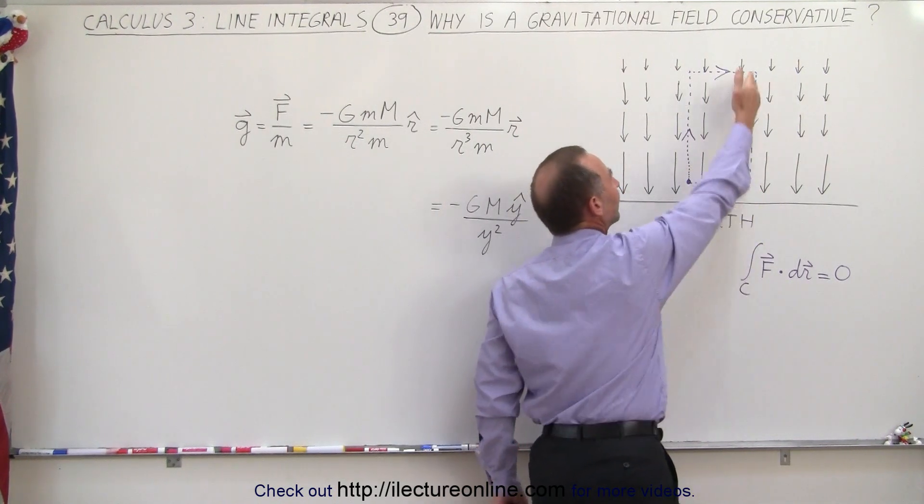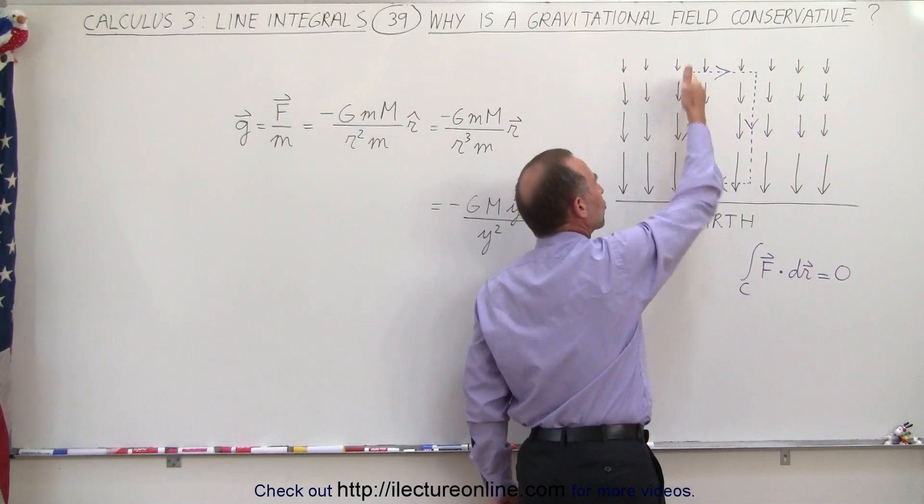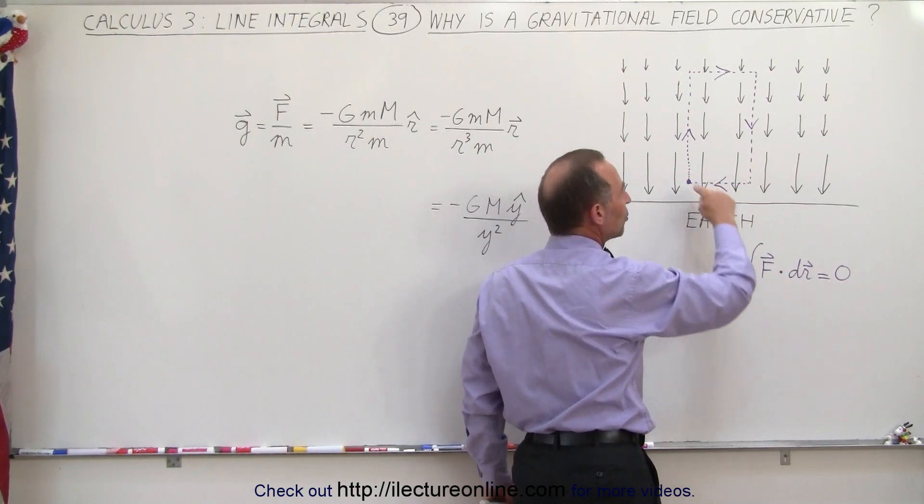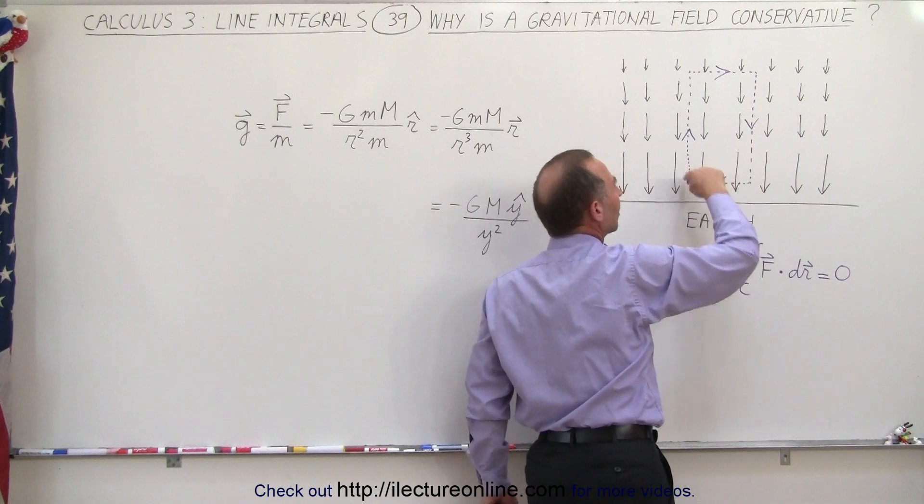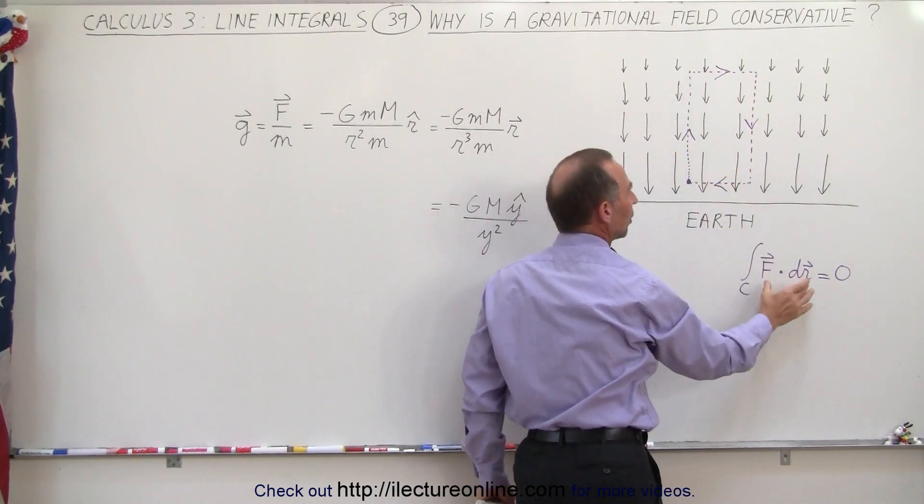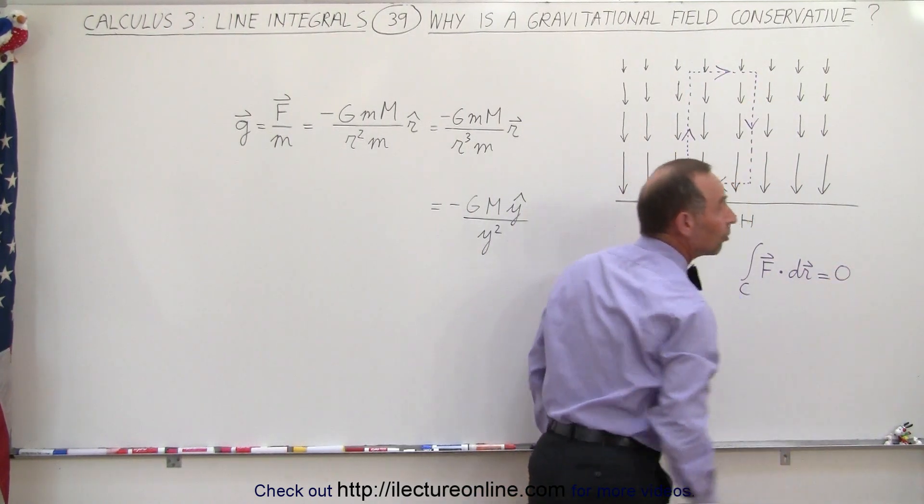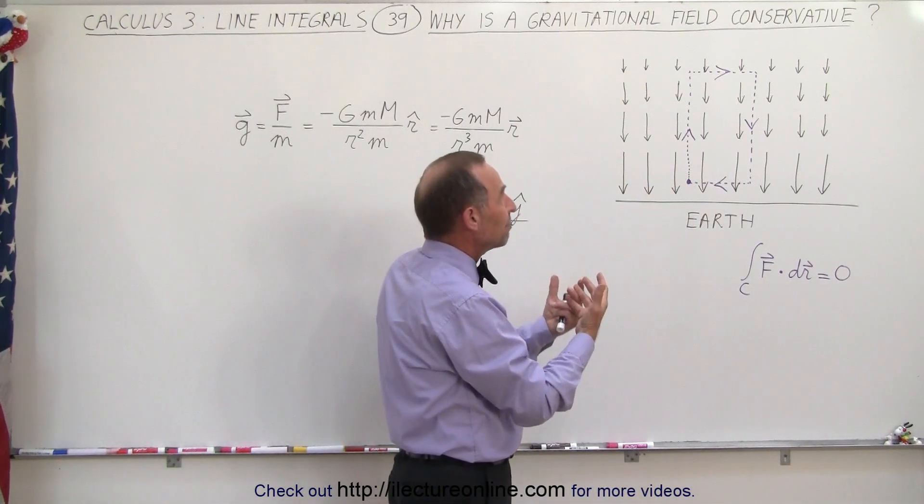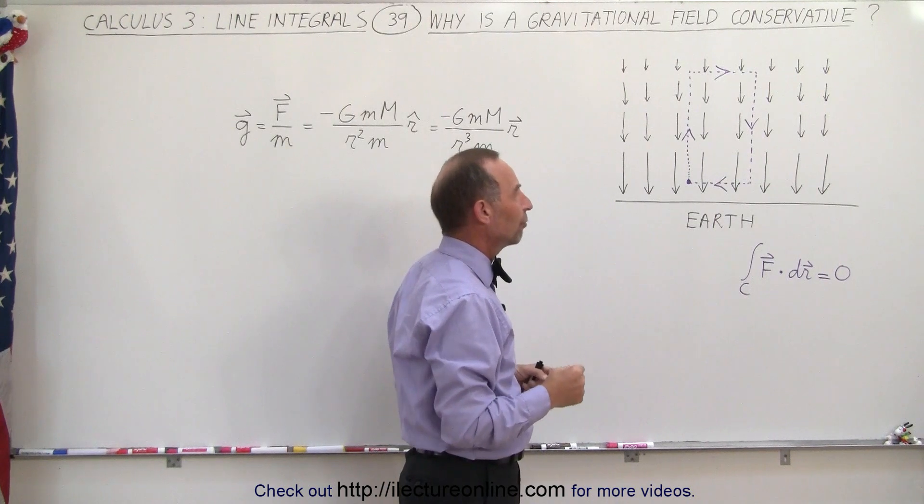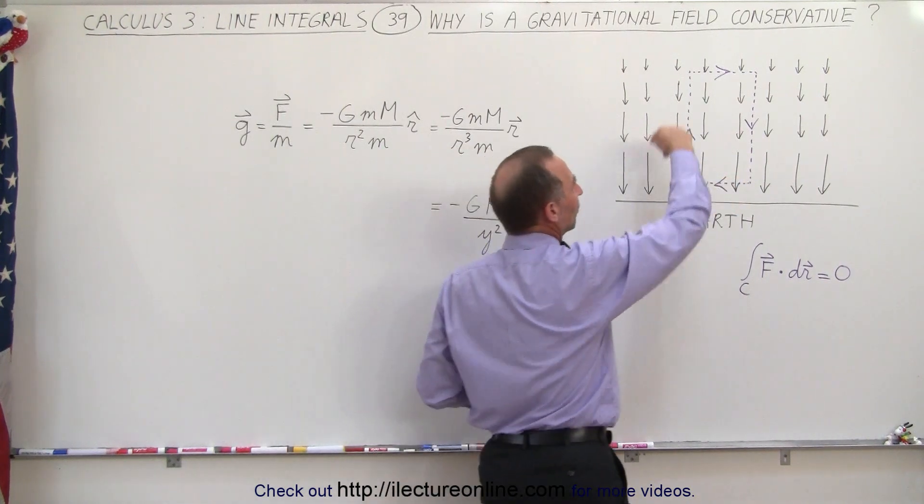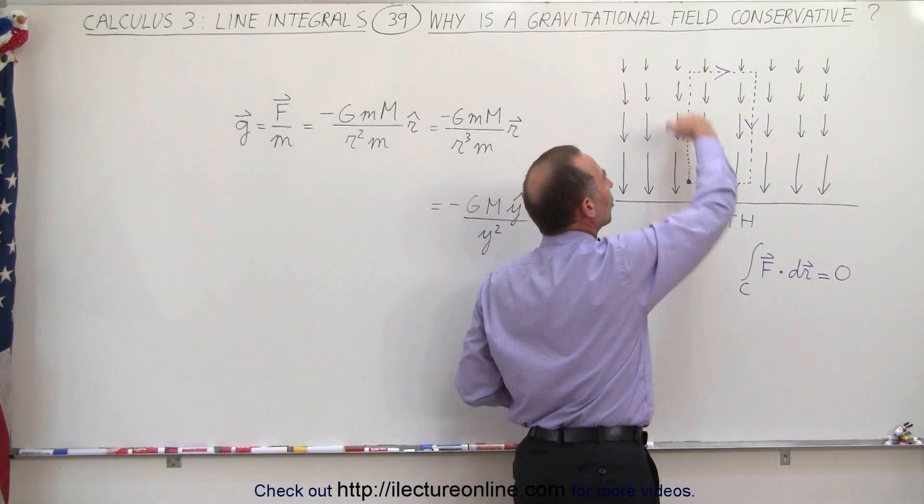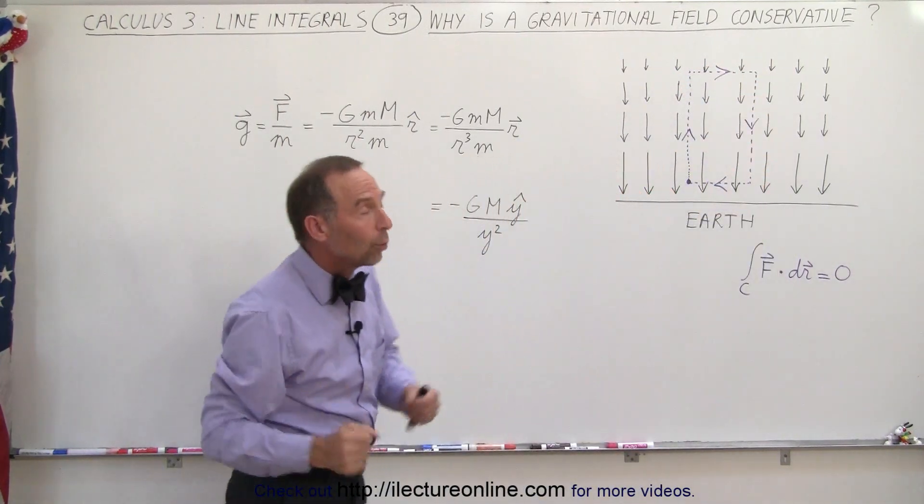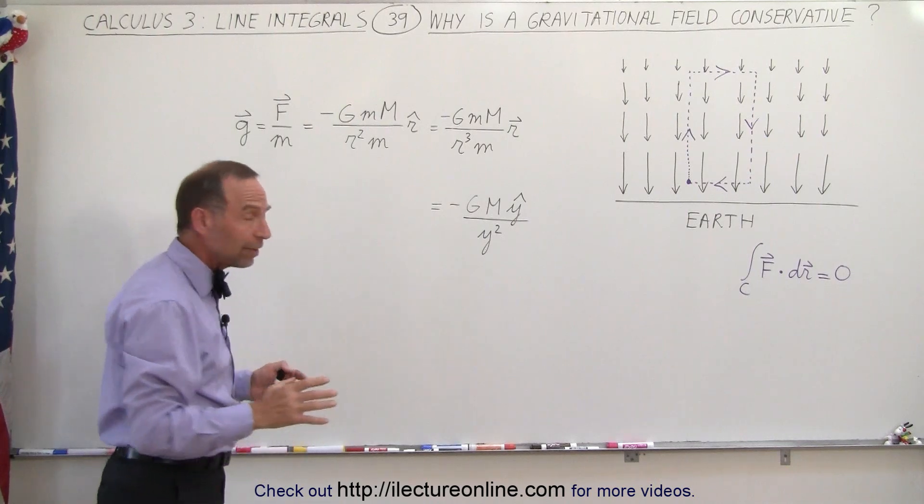You can see that the amount of addition versus the amount of subtraction, the two are exactly equal in magnitude. Therefore, when you integrate a line integral all the way around the closed loop, the contribution in total will be equal to zero because the field is conservative. That's what we mean by a conservative gravitational field: every time you travel in a loop, you have the same addition as subtraction, and therefore they will always cancel out.